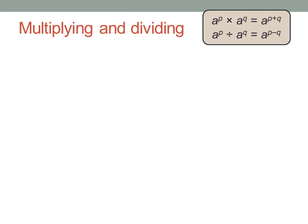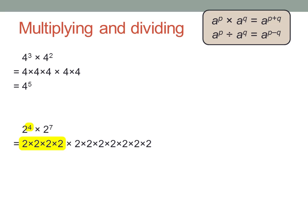Let's start with multiplication and division. Suppose I have four to the power of three times four to the power of two. That's four times four times four, times four times four. How many fours do I have in total? Three plus another two — four multiplied by itself five times, giving four to the power of five. Similarly, two to the power of four times two to the power of seven gives four twos times seven twos — four plus seven — two to the power of eleven.